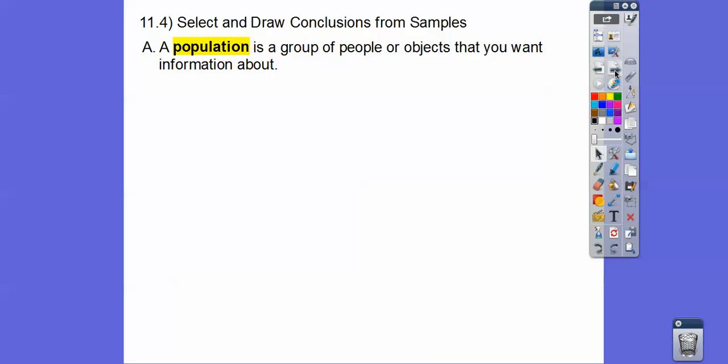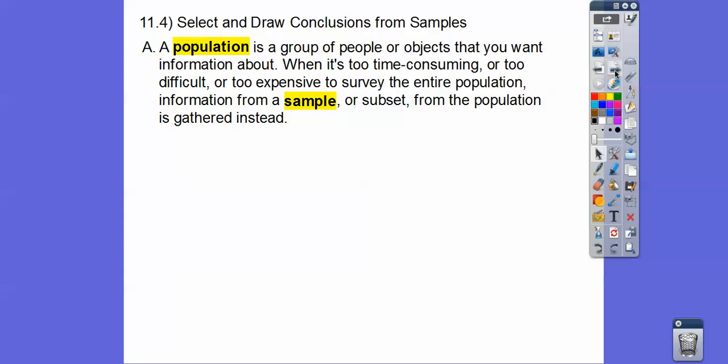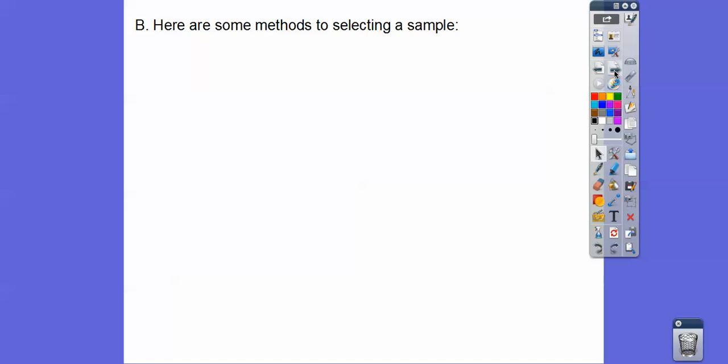A population is a group of people or objects or bugs or whatever that you want to collect information about. When it's too time-consuming or too difficult or too expensive to survey your entire population, then what we do is get a sample, so we can get information from a sample or a subset from the population. Instead of polling everybody in the United States about the president's race, which is impossible, they take samples and use those samples to make generalizations about the whole entire population.